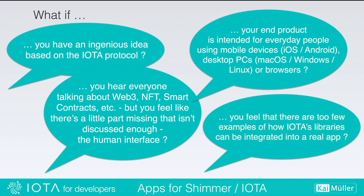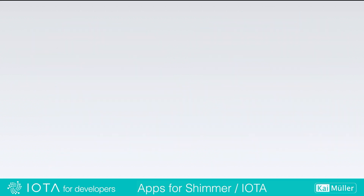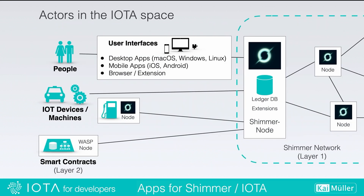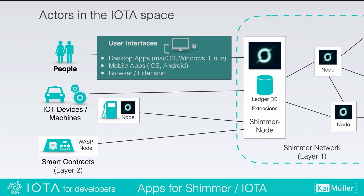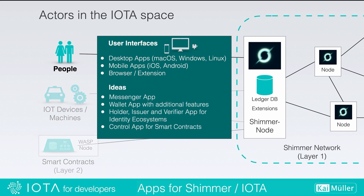You feel that there are too few examples of how IOTA's libraries can be integrated into an app. We are talking about user interfaces for macOS, Windows, Linux, iOS, Android, and also maybe browser extensions. In my opinion, these platforms should be supported when you think about a messenger app, wallet app with additional features, an app for an identity ecosystem, or if you want to control smart contracts or start a chain via a call data request.